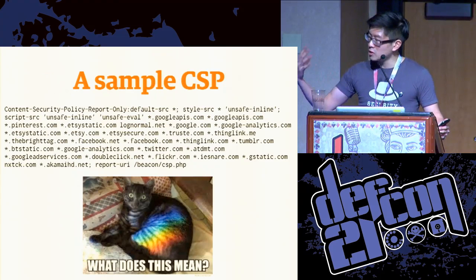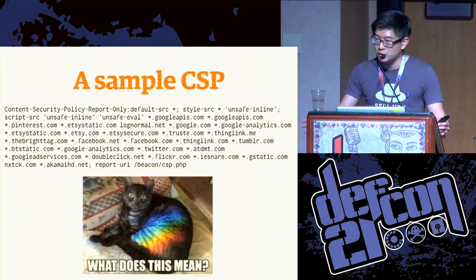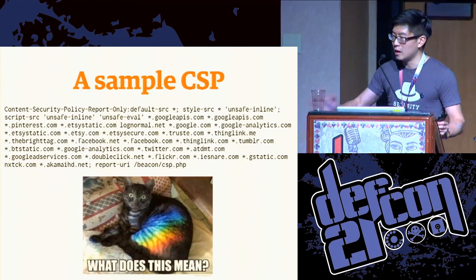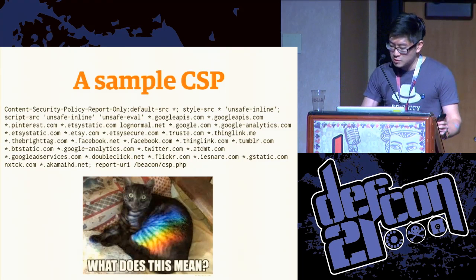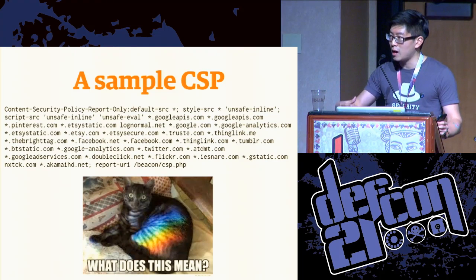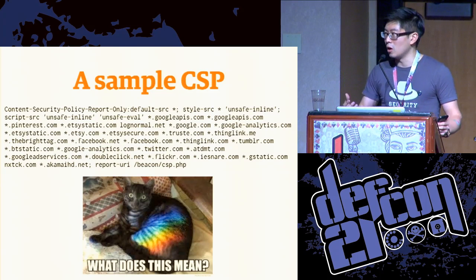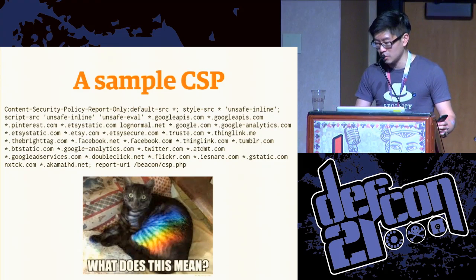Here's an example content security policy header. You're not expected to understand this — there will be no quiz. This is just to demonstrate what a content security policy looks like. It's basically specified as a set of directives with a set of URIs and keywords that tells the browser what you are allowed to execute JavaScript and other elements from.